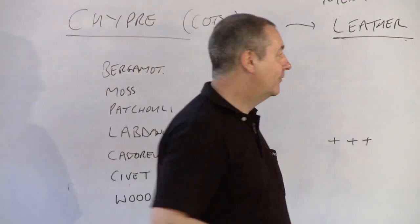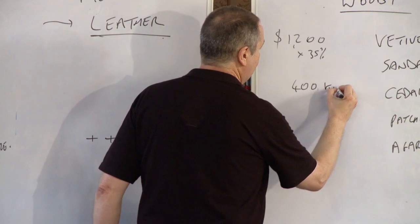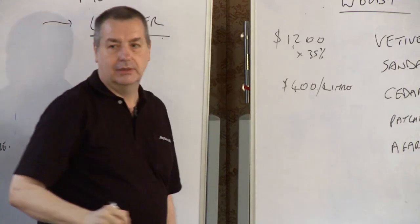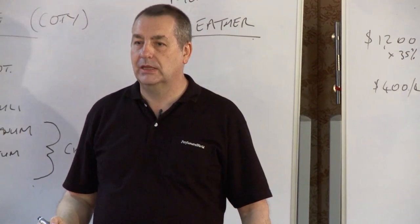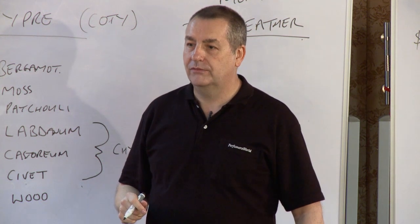A third, yeah? $400 a kilo? Yeah, $400 for one liter. That's a liter, yeah? All right, so how much for one cc? $0.40.